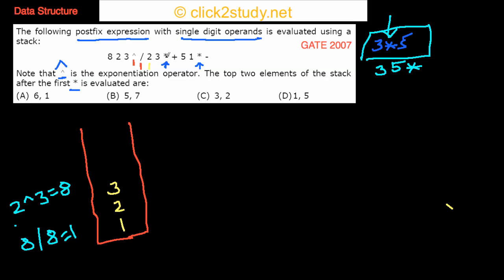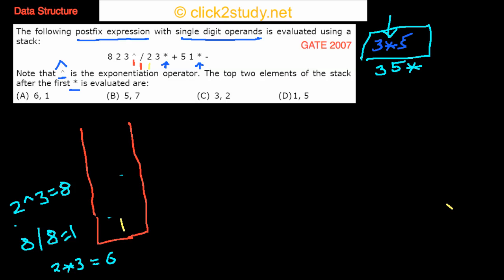Then I meet the first asterisk — the first multiplication. I need to find the top two elements of the stack after evaluating this. I take the top two elements (2 and 3), multiply them: 2 × 3 = 6, remove those two and put 6 in their place. So the top two elements after the first multiplication are 6 and 1, which is option A.